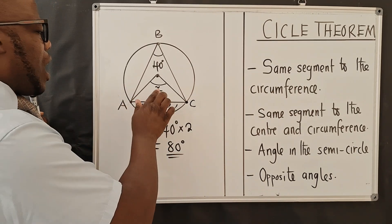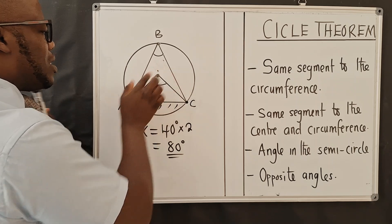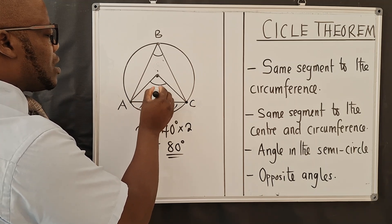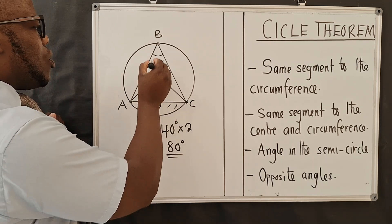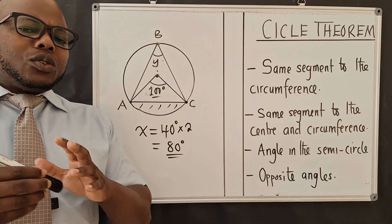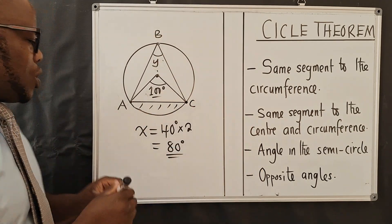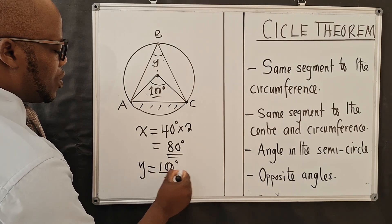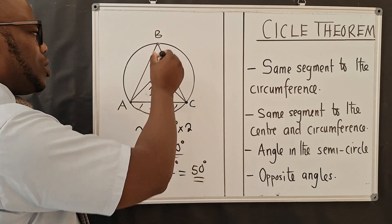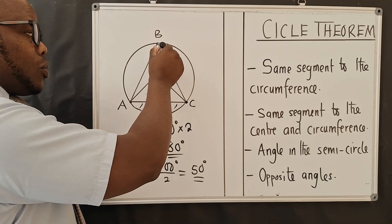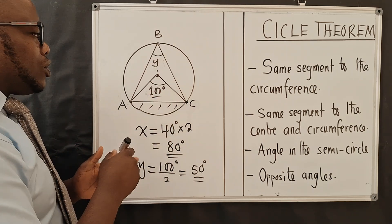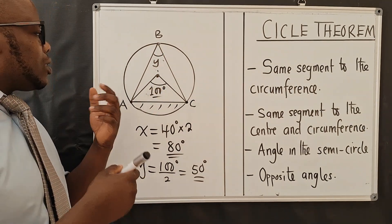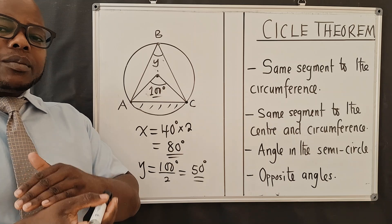Now what if you are given the angle at the center? Let's say this is 100 degrees — what will be the angle at Y? Using property number 2, the angle at Y will simply be equal to 100 degrees divided by 2, which gives us 50 degrees. To find the circumference angle when given the center angle, you divide by 2. But to find the center angle when given the circumference angle, you multiply by 2, since the center angle is twice the circumference angle.